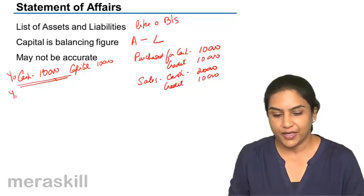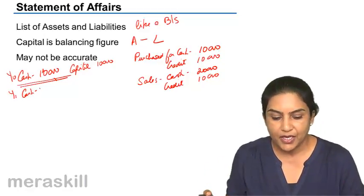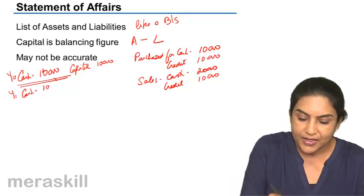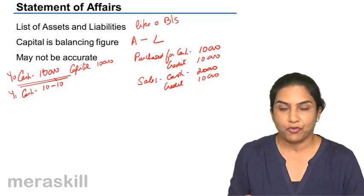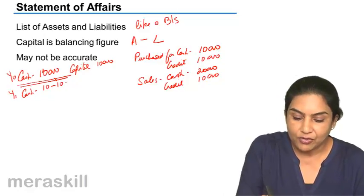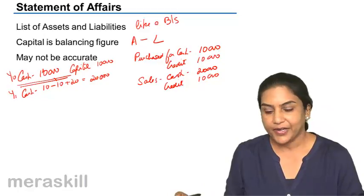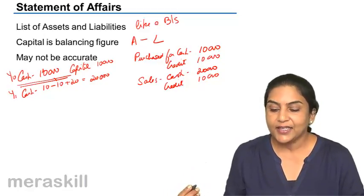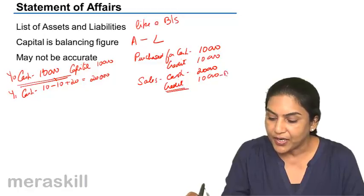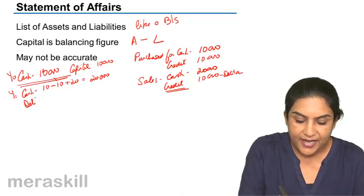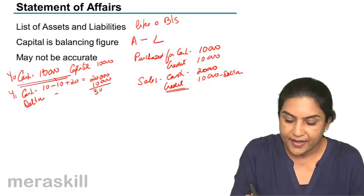At the end of the year, what is my cash balance? I started with 10,000, then money went out 10,000 for purchases, and credit purchases had no cash outflow. Then I received 20,000 from cash sales, giving a cash balance of 20,000. Another asset is debtors worth 10,000, since I sold on credit. Total assets are 30,000.